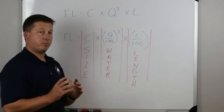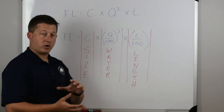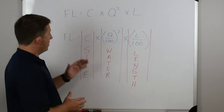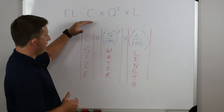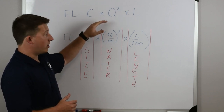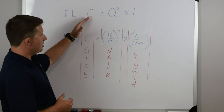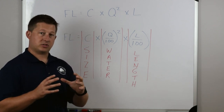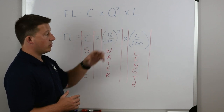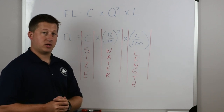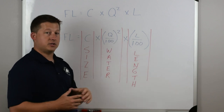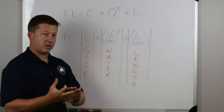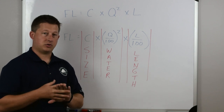Now we're going to take the friction loss component and learn how to work that component within pump discharge pressure and total pressure loss. Looking at the formula, it's friction loss equals C times Q squared times L. C is your coefficient of friction — you don't change that number, it's based on the size of your hose. Q is the quantity of water moving through your hose line, and L is the length of hose. So we need three components to calculate friction loss.